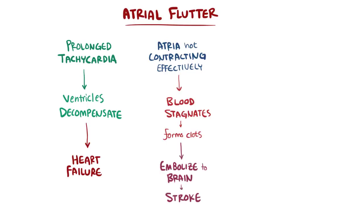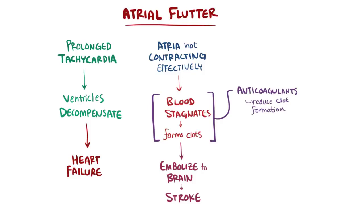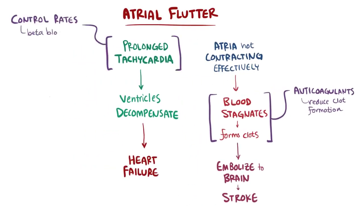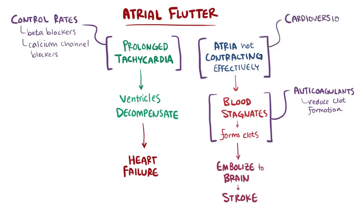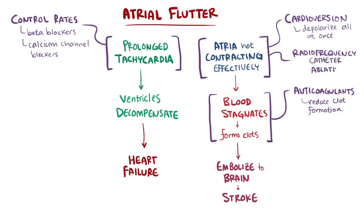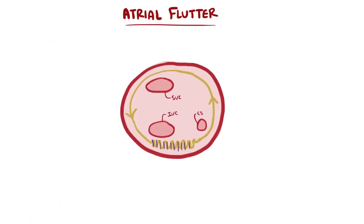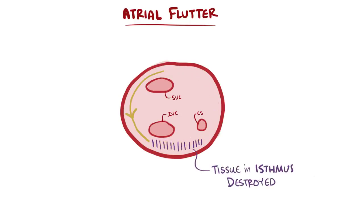Usually because of the potential for embolism, people with atrial flutter are given anticoagulants, or blood thinners, to reduce the chance of clot formation. They might also be given medications to control rates in the ventricles, like beta blockers or calcium channel blockers. Alternatively, an electrical cardioversion can be performed to stop the episode of flutter — these essentially depolarize all the atrial tissue at once and let the sinus node take control again. Finally, depending on the type of flutter, type 1 versus type 2, patients might be good candidates for a radiofrequency catheter ablation, where the cavotricuspid isthmus is destroyed such that no signals can propagate through it and therefore no circuit can develop around the tricuspid valve.